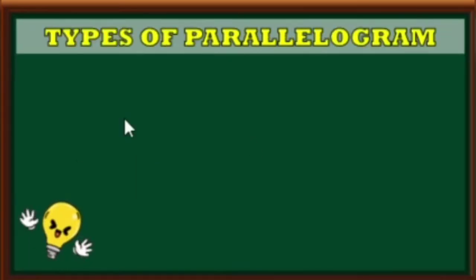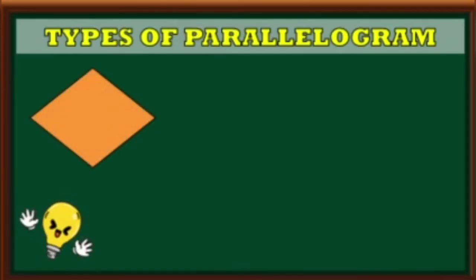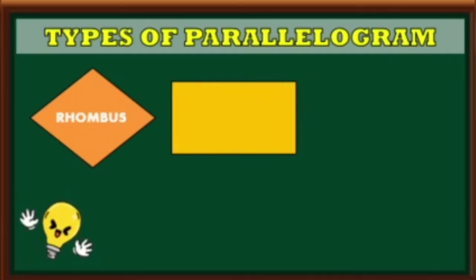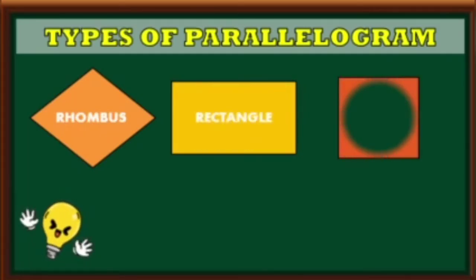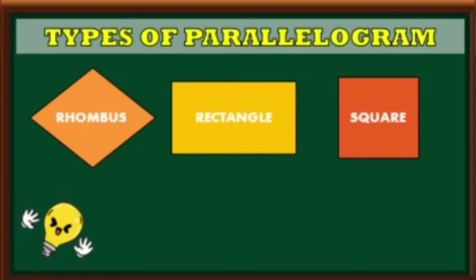Let us go back to the types of parallelogram. Number 1, we have rhombus. Number 2, rectangle. And number 3, square.